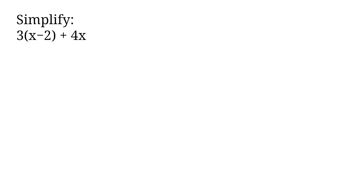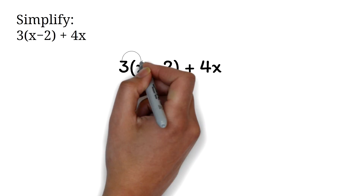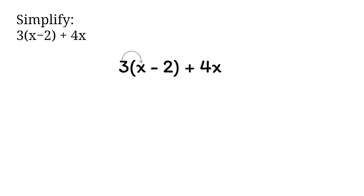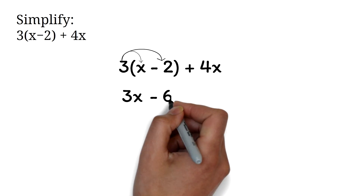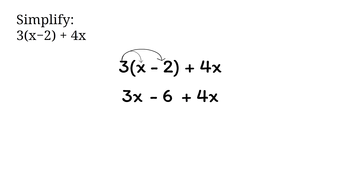Simplify 3 times (x minus 2) plus 4x. For a question like this, we have to first distribute the 3. Distribution simply means we will multiply each term in the parenthesis by the 3. So we have 3 times x, which is 3x. Then we have 3 times minus 2, which is minus 6. Then we have our plus 4x. We can now add like terms: 3x plus 4x will be 7x. There are no more like terms, so we have 7x minus 6 as our final answer.